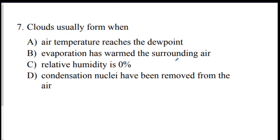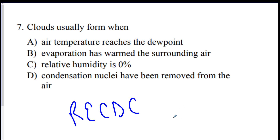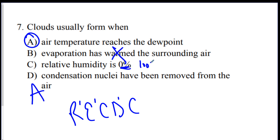Number seven: clouds usually form when what happens? Again, RECDC — rises, expands, cools to the dew point, condenses onto condensation nuclei — the answer is A. Evaporation does not warm relative humidity, you need 100% relative humidity for a cloud to form, and you need condensation nuclei present.